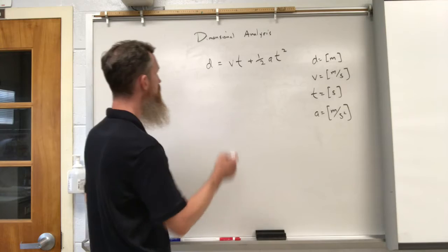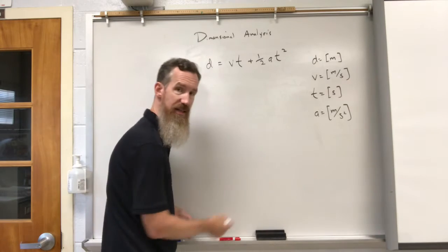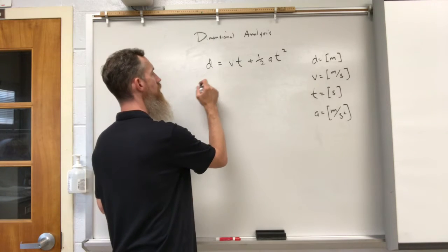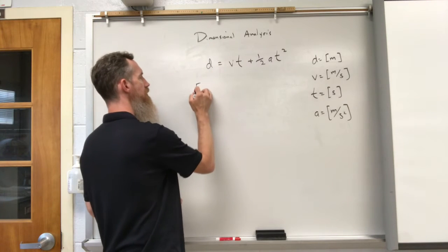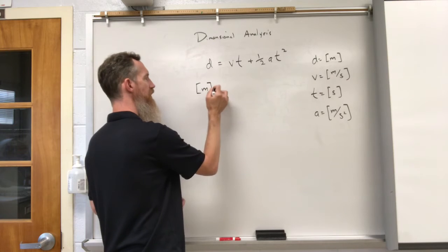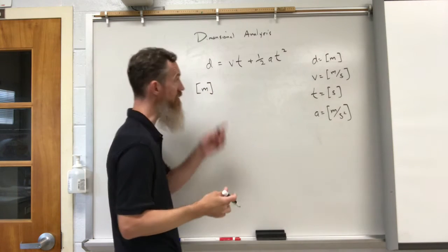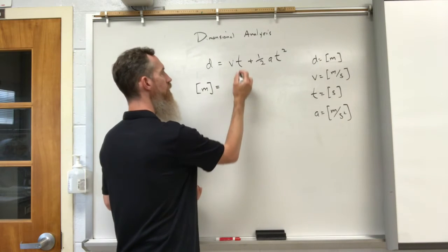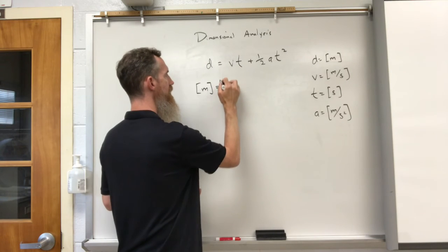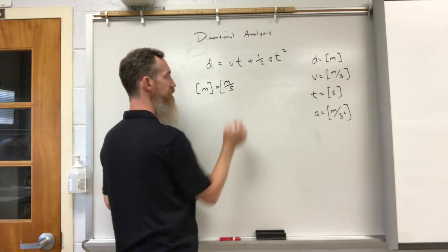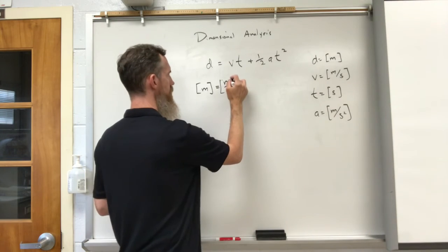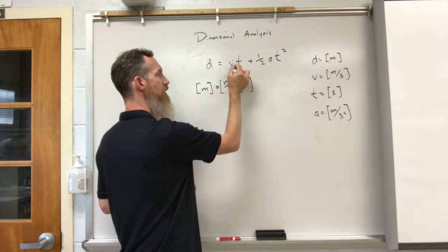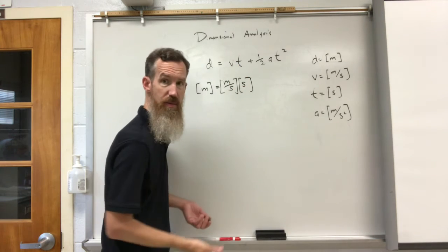What you can do is analyze the formula by looking at just the units and seeing if it works. So distance is measured in meters. I'm going to basically substitute the distance with the unit that it goes with: meters. Velocity has meters per second. Time is seconds. And since they're multiplied together in the equation, the units would be multiplied also.